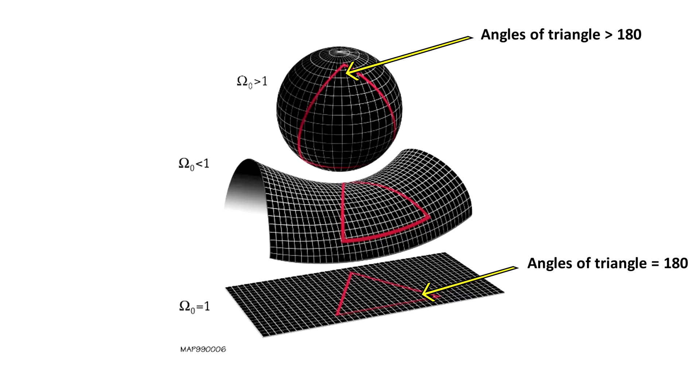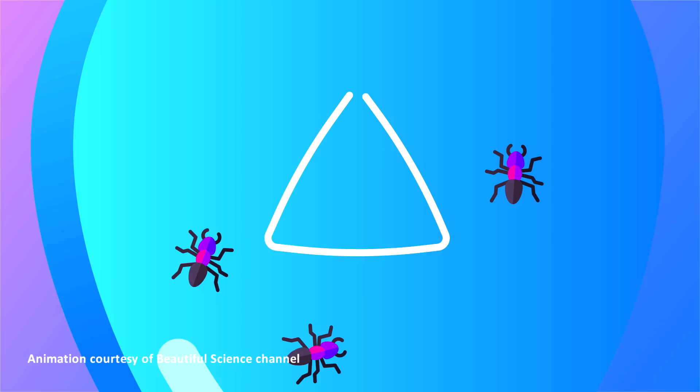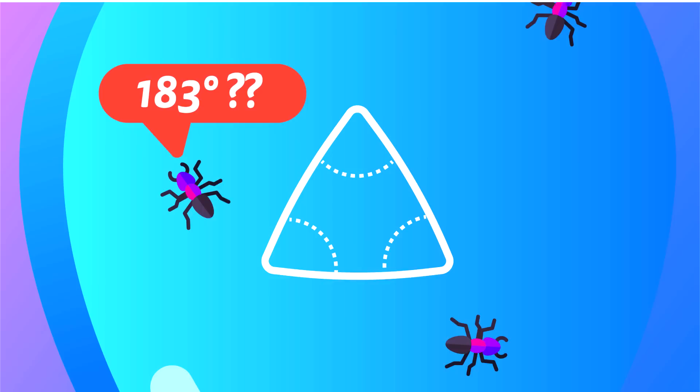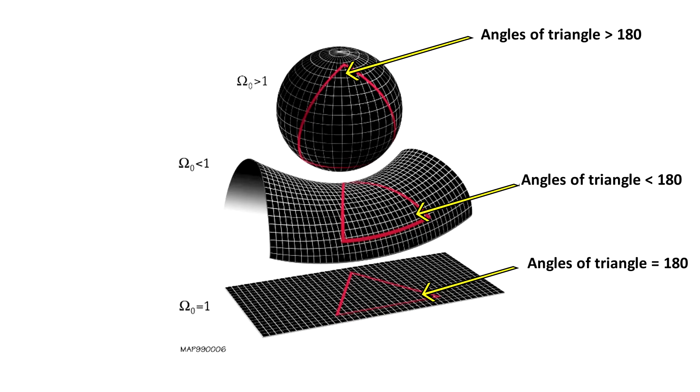This is like ants on a balloon trying to measure the flatness of their 2D universe, by adding up the angles in a triangle, to make sure that they add up to 180 degrees. In a positively curved universe, the angles would add up to greater than 180 degrees. Likewise, distant light rays would diverge if we lived in a negatively curved space, shaped like a saddle, and the angles would add up to less than 180 degrees.